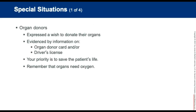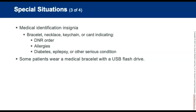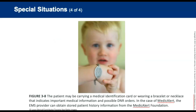Organ donors have expressed a wish to donate their organs. Consent information is on the donor card or driver's license. Treat potential organ donors the same as you would any other patient — your priority is to save the patient's life, and remember that organs need oxygen. Medical identification insignia can come in the form of bracelets, necklaces, a keychain, or a card indicating a DNR order, an allergy, or any other serious medical conditions that might be helpful in assessing and treating the patient. Some patients wear medical bracelets that may contain a USB flash drive, often stored as a PDF file readable on most computers.